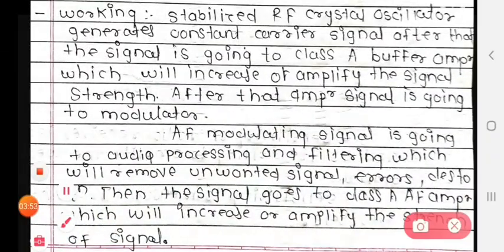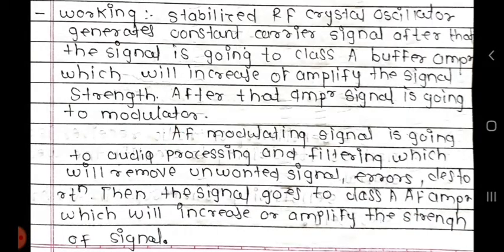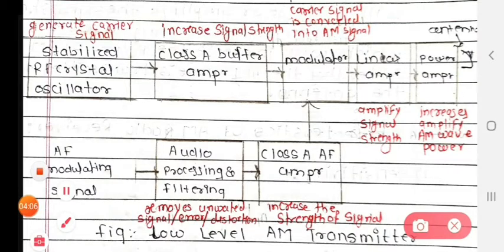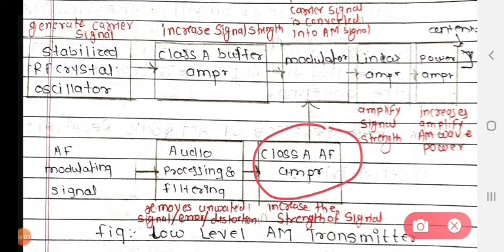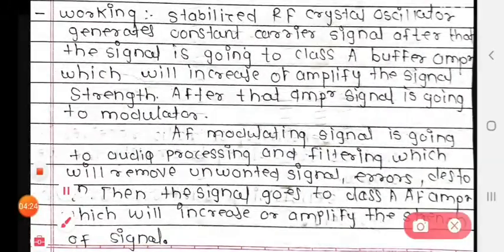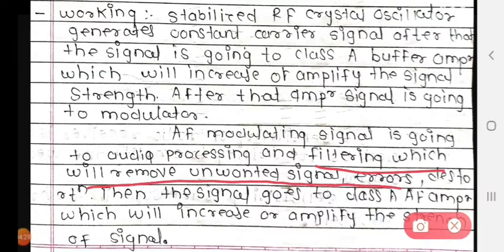The AF modulating signal goes to audio processing and filtering. The audio processing and filtering removes the unwanted signal, error, and distortion from the AF modulating signal before it proceeds further.